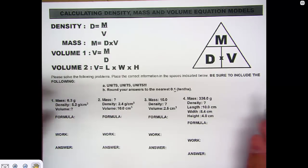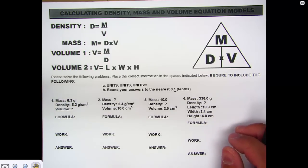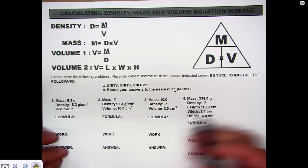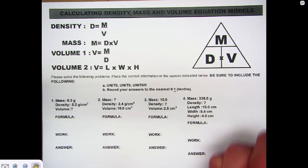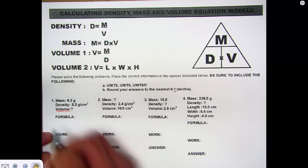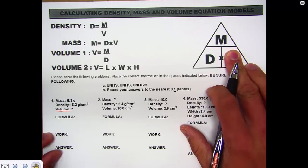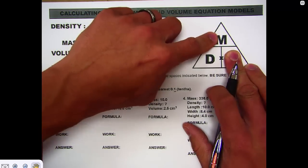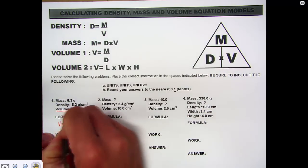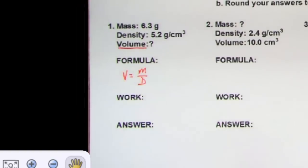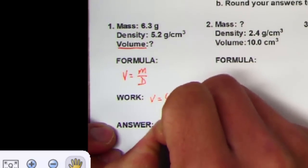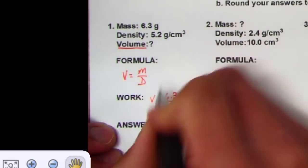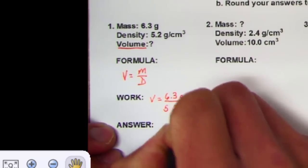This question may be laid out as a word problem saying: an object has a mass of 6.3 grams, its density is 5.2 grams per cubic centimeter — what is the volume? When you find out what you need to solve for, go to your DMV triangle. I need to solve for volume, so I cover up V, and that leaves me with mass over density. My formula is volume equals mass over density. Then it's just a matter of plugging in numbers.